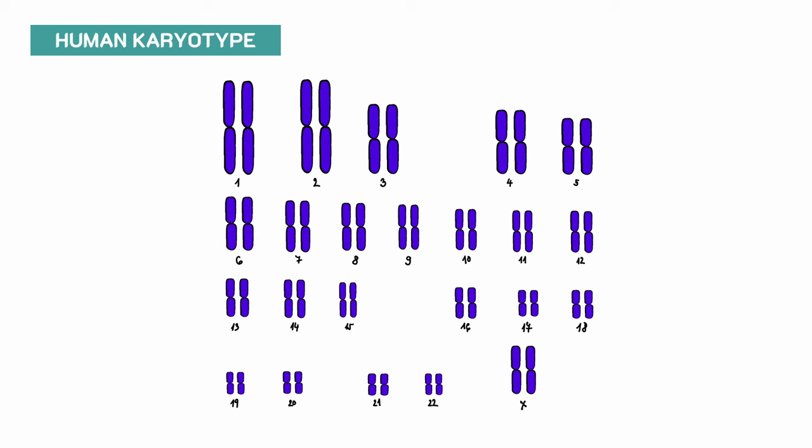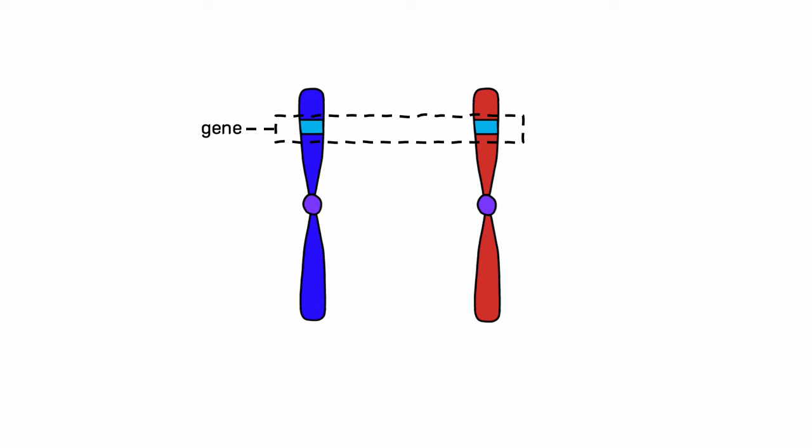For that reason we have two versions of the same gene, as you can see here on the two chromosomes. These variants are called alleles.